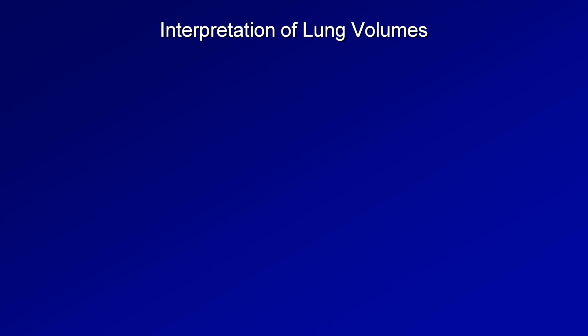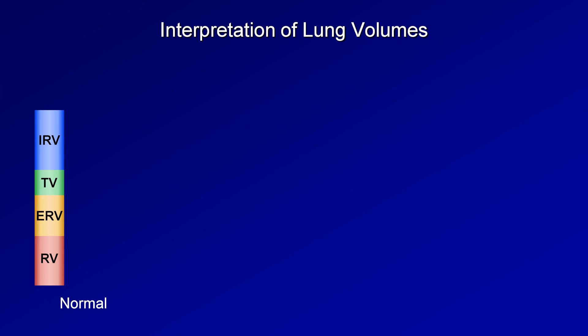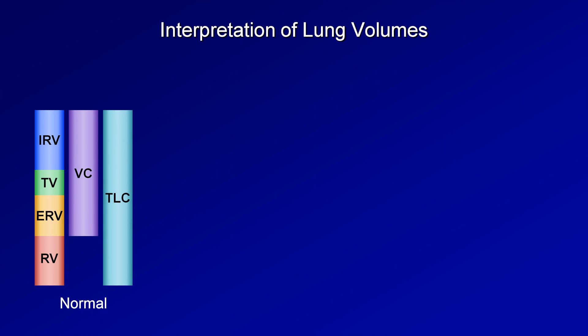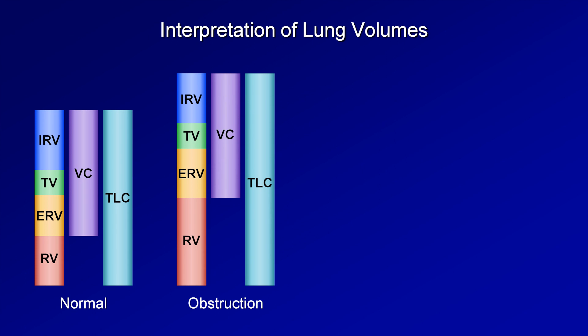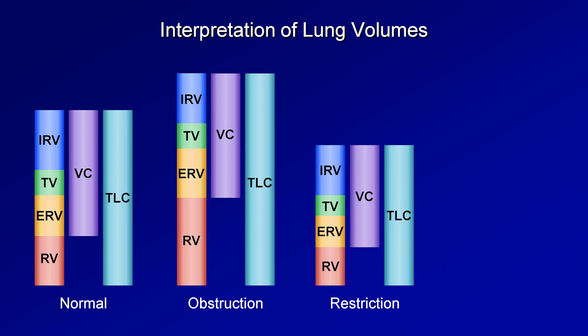Here is how the four individual lung volumes break down for some categories of lung disease. For comparison, here's a normal patient's volumes with the vital capacity, or FVC, and the TLC. In typical obstructive lung disease, the residual volume is greatly increased while the other volumes remain about the same. Therefore, the vital capacity is also about normal while the total lung capacity is often increased. In restrictive lung disease, all of the lung volumes are reduced, resulting in both a reduction in vital capacity and TLC.